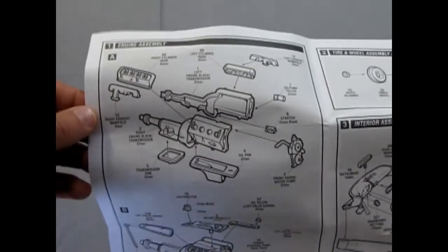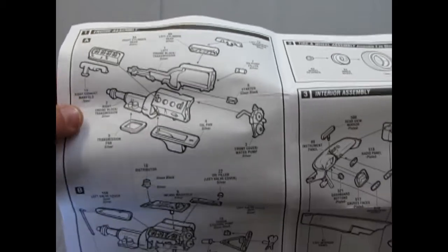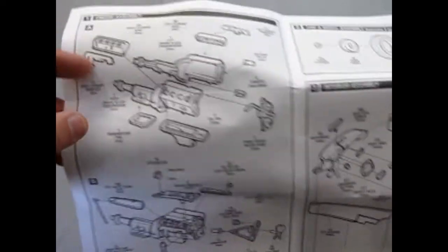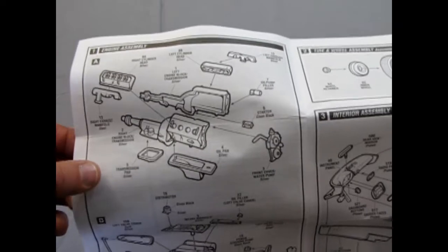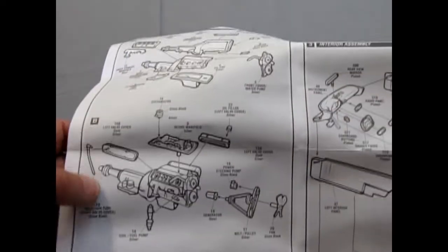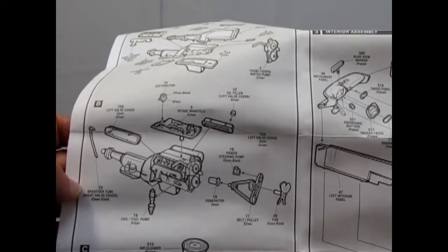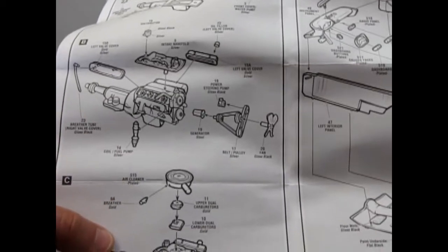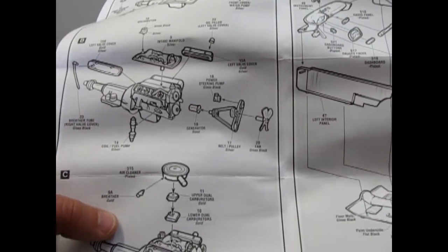So here we have this amazing Chrysler engine, the Plymouth engine, with the rockers exposed in the cylinder head, as well as a separate breather tube and the carburetor.